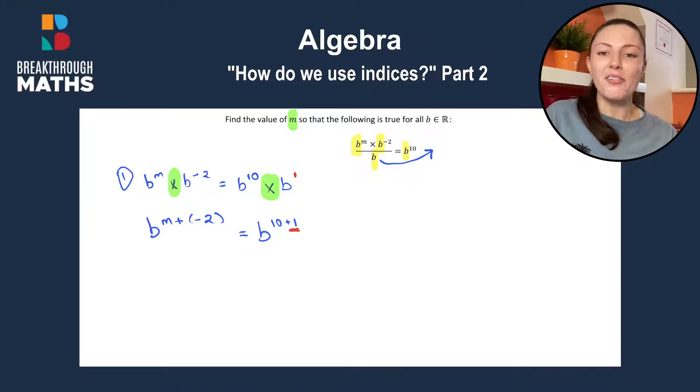Carrying on from here and simplifying what we have in the powers. Here we'll have M minus 2 because minus by plus gives us a minus. Then we'll have 10 plus 1, which will give us B to the power of 11.